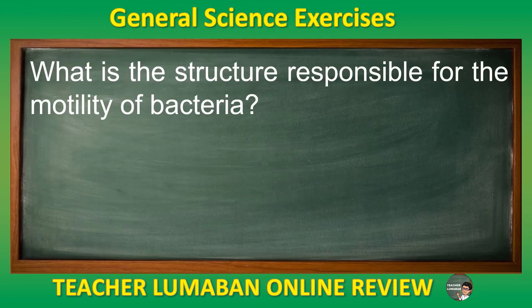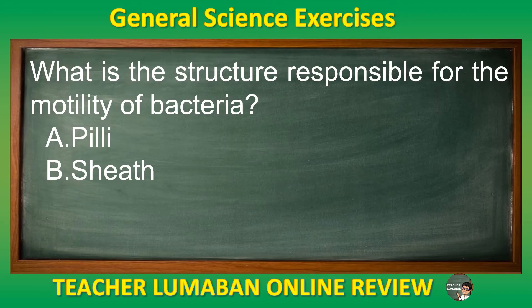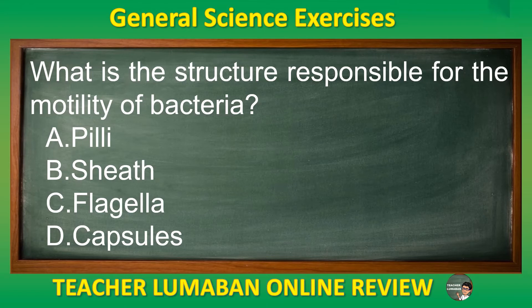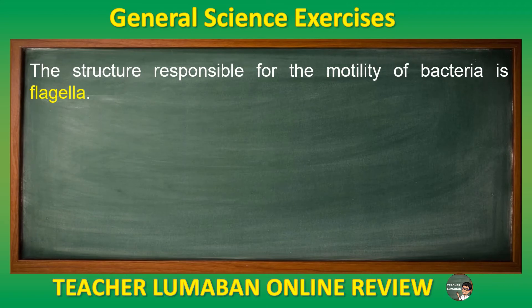What is the structure responsible for the motility of bacteria? Letter A: Pili. Letter B: Sheath. Letter C: Flagella. Letter D: Capsules. The correct answer is Letter C: Flagella. The structure responsible for the motility of bacteria is flagella.